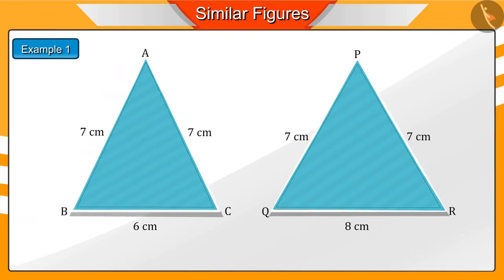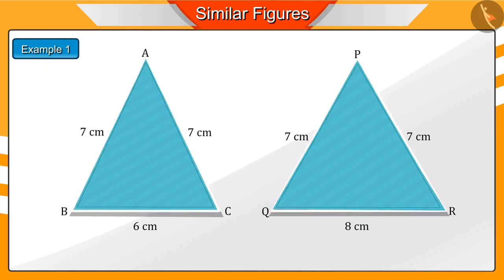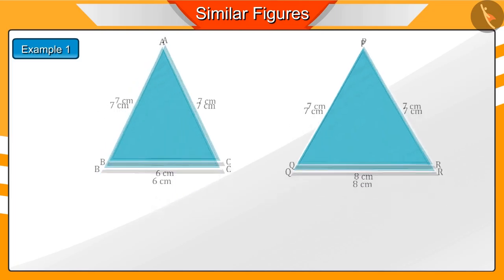Polygons are similar if their corresponding angles are equal and the ratio of their corresponding sides are the same. Let's first see the ratio of the corresponding sides in these triangles.